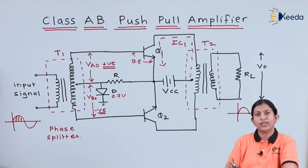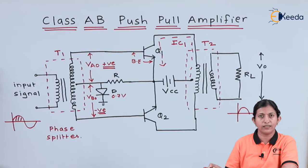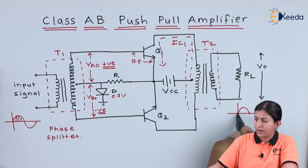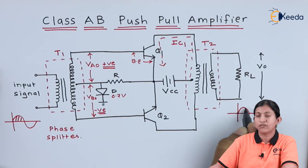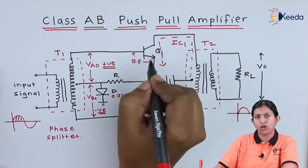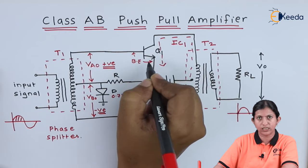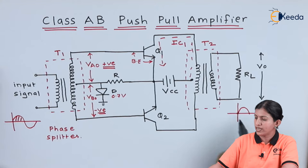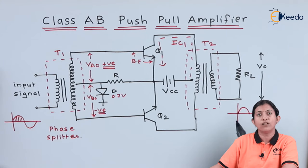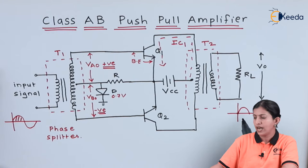The difference between the class B push-pull amplifier and this amplifier is that as soon as we apply the voltage, the transistor will be on. Because transistor Q1 is already on due to the forward bias voltage applied to it, as soon as we apply the input the transistor gets more forward biased and it will be on even when the input voltage is 0.